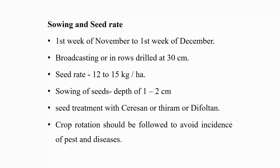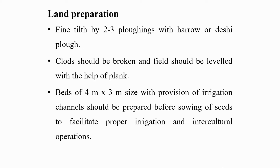Soaking of seeds for 8 hours before sowing is helpful in getting good germination. Soaked seeds should be dried in shade to facilitate broadcast casting. Sowing at high depth affects the germination of seeds adversely. Crop rotation should be followed to avoid incidence of pests and diseases.